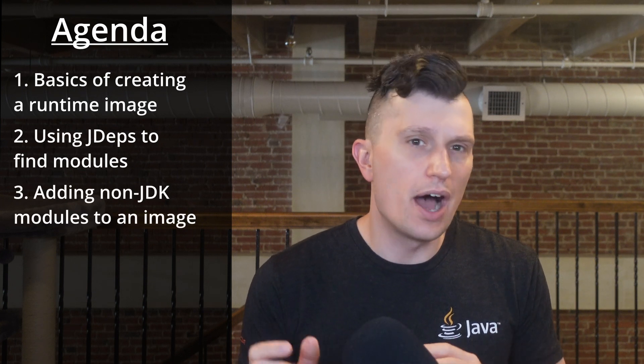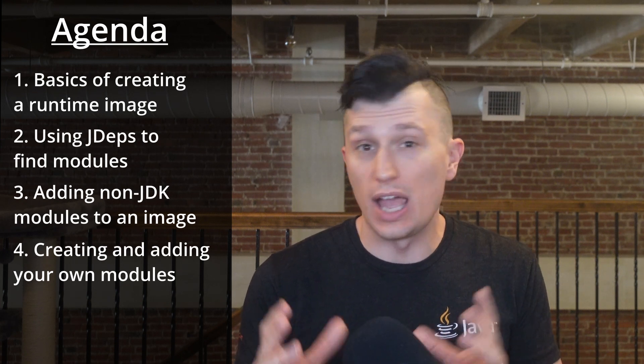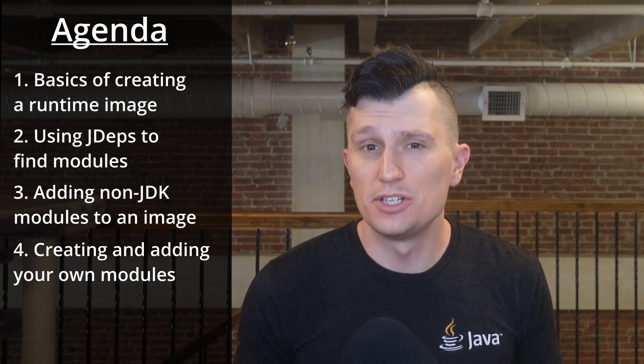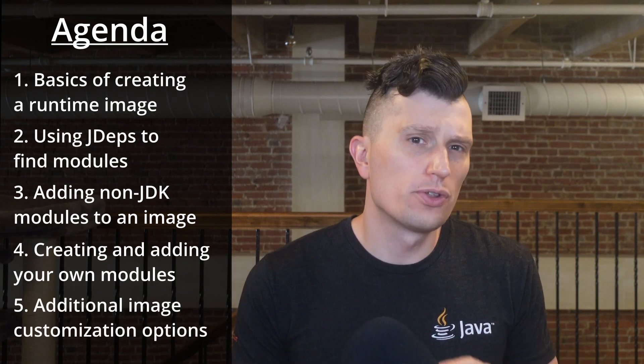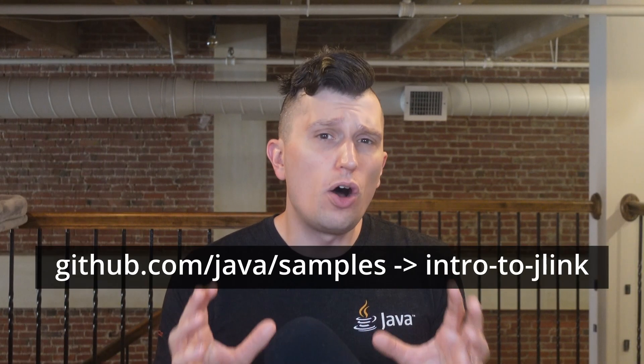For more background on the technical details of JLink, check out my Stackwalker video on JLink. In this video, we will cover basics of creating a custom runtime image, using JDeps to find which modules you'll need, adding non-JDK modules to custom images, creating your own explicit modules and adding them to a custom image, and options for further customizing the images created with JLink. You'll find all the code examples for this video at the GitHub repo. Okay, we have a lot to cover, so let's get started.